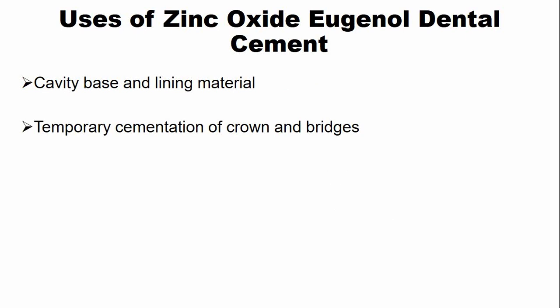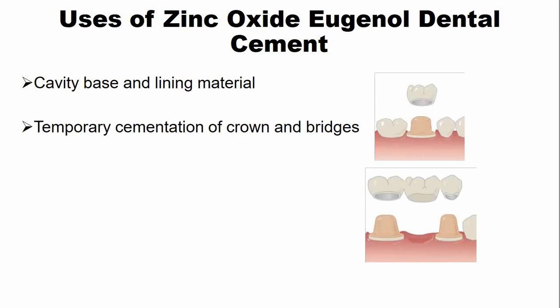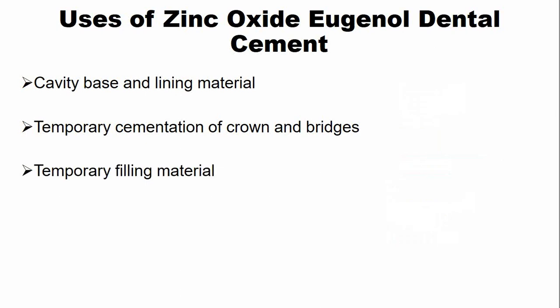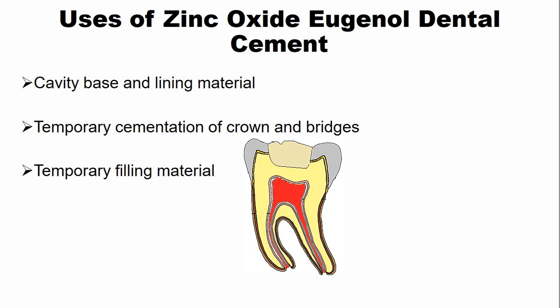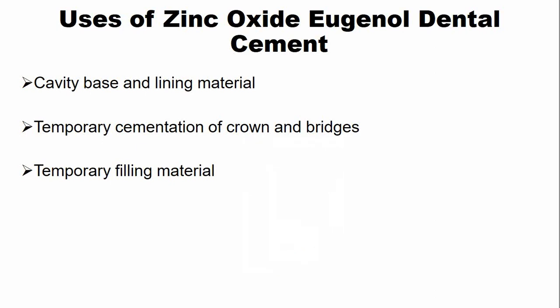It is also used as a temporary cementation material for crowns and bridges. Zinc oxide eugenol cement is also used as a temporary filling material and sometimes for periodontal dressings after periodontal surgery.